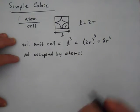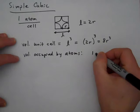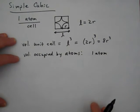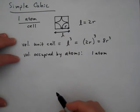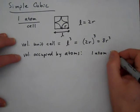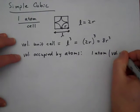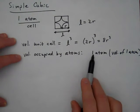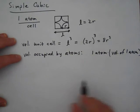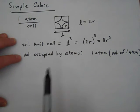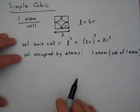So now I need to find the volume that's actually occupied by atoms. So here's how you might do that. So I've got one atom in my unit cell, because it's a simple cubic unit cell, and I know that simple cubic unit cells only contain one atom per cell. So the volume occupied by atoms, I've got one atom, and so I just need to multiply this by the volume of one atom.